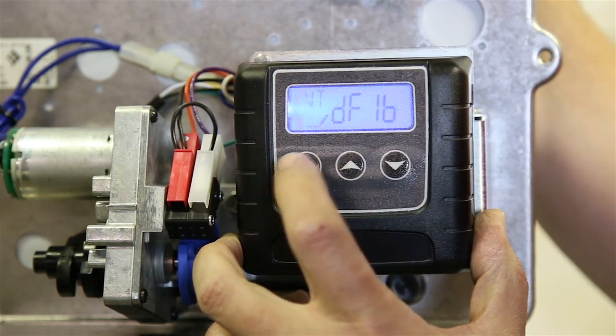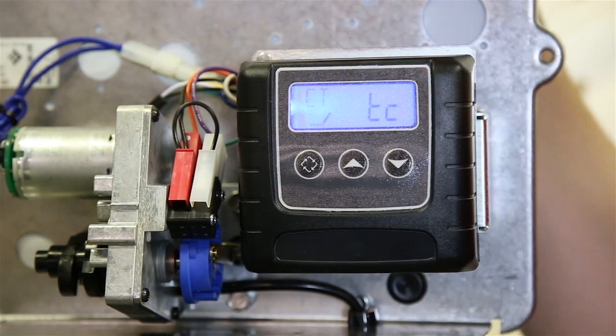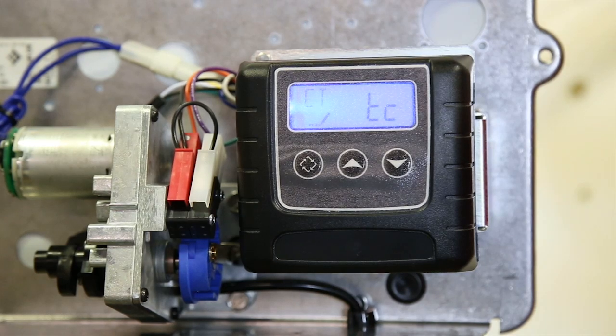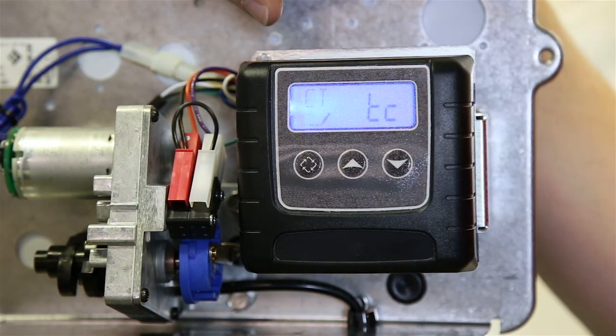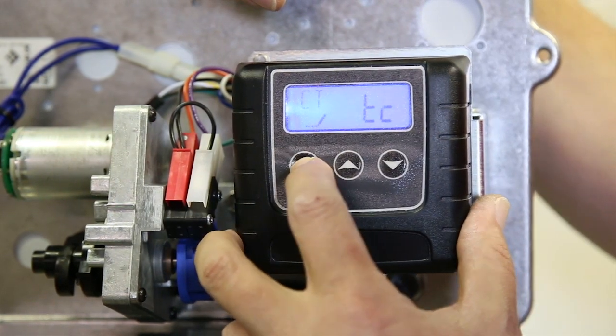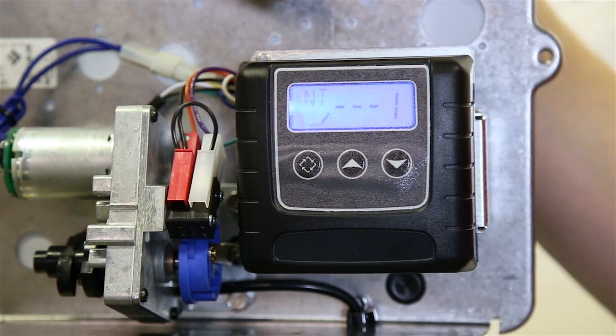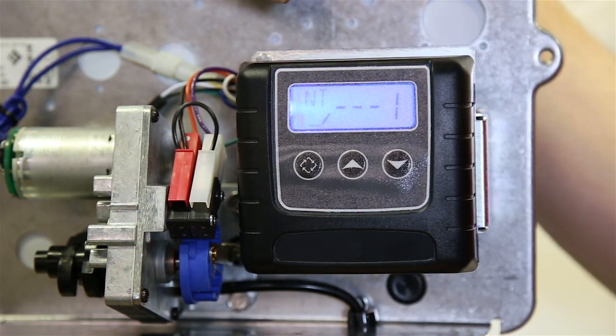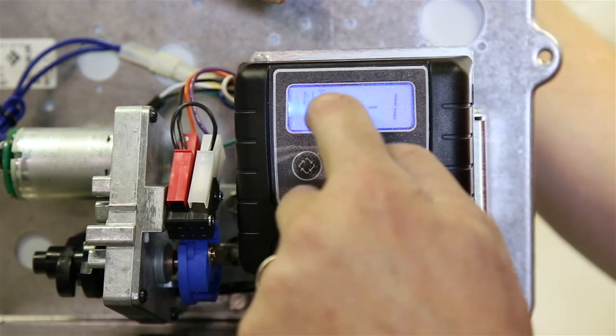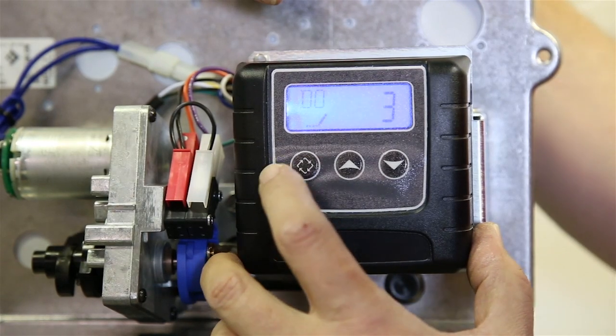The next one is control type. For this particular unit, we want to set it up as a time clock unit because we want this unit to regenerate based off of days between cycles. So we're going to leave that on TC for time clock and save it and go to the next parameter. The next parameter is number of tanks. And that represents the number of tanks below the actual control valve here. Since this is a single tank unit, that's why it says NT and then just one there.